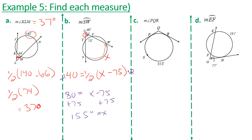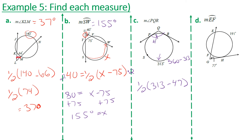For example 5c, we want the measure of angle PQR. We have a major arc of 313 degrees. Since the circle is 360 degrees, the minor arc is 360 minus 313, which equals 47 degrees. The angle equals one-half of 313 minus 47, which is 266. Half of 266 is 133 degrees.